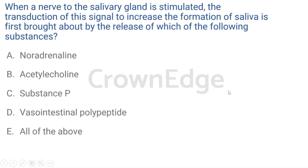The next question is related to the physiology of saliva secretion. When a nerve to the salivary gland is stimulated, the transduction of this signal to increase saliva formation is first brought about by the release of which of the following substances? Options are: A) noradrenaline, B) acetylcholine, C) substance P, D) vasoactive intestinal peptide, and E) all of the above.